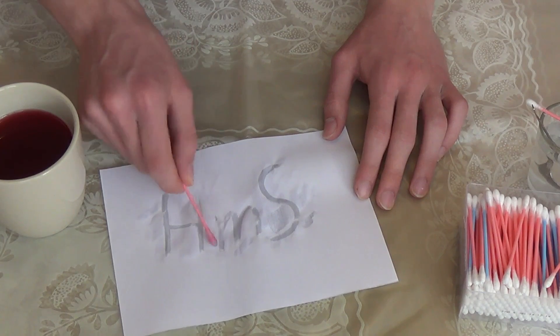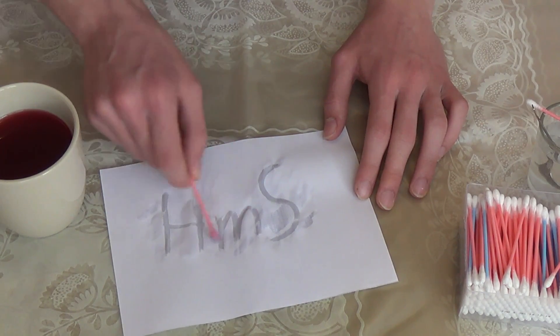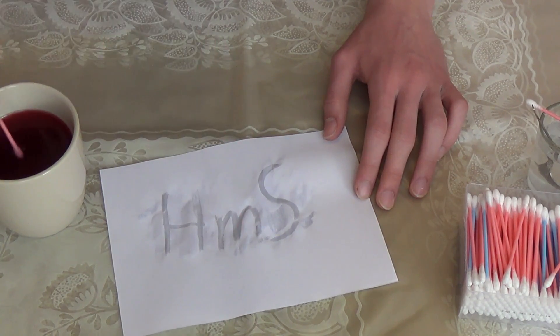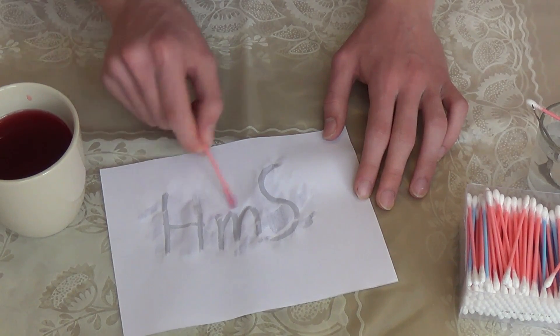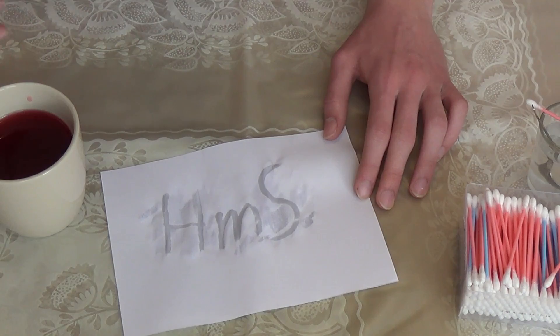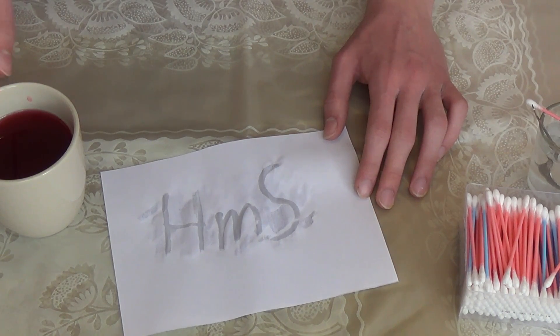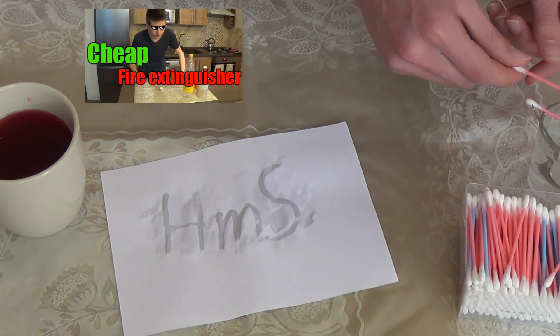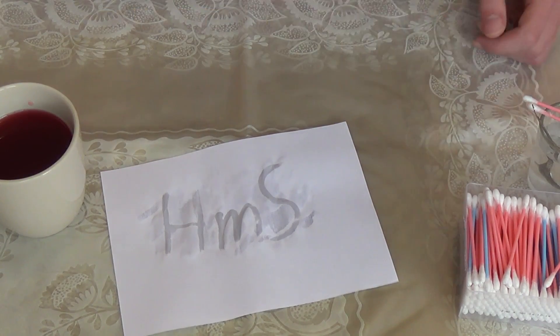And there you have it, guys. The secret message is revealed. This happens because hibiscus is a natural pH indicator, and when it comes into contact with bases, it makes a darker red color. And as you may already know from my fire extinguisher video, baking soda is a base.